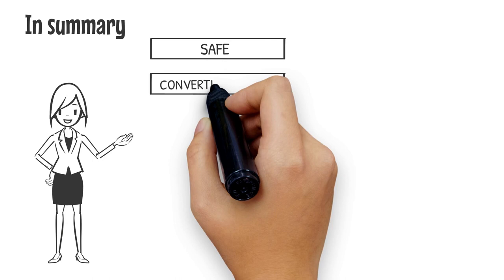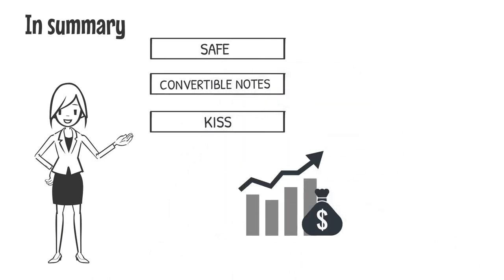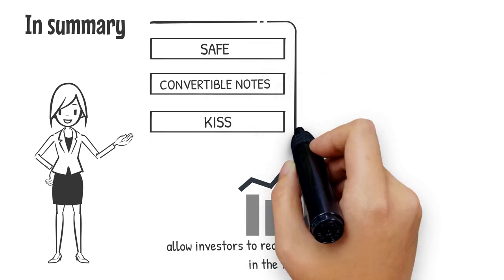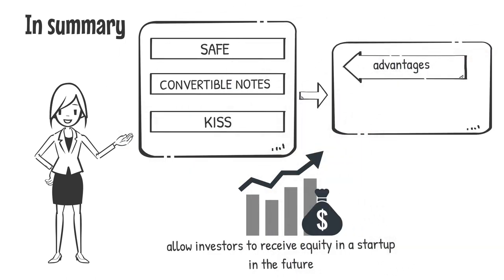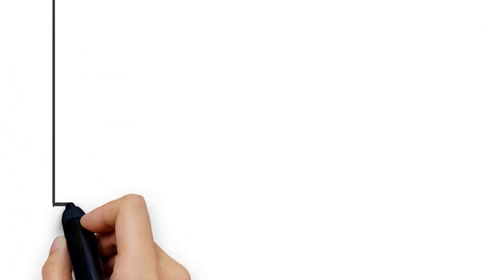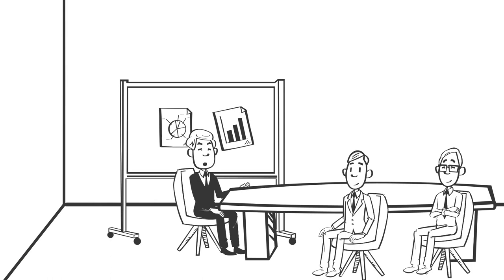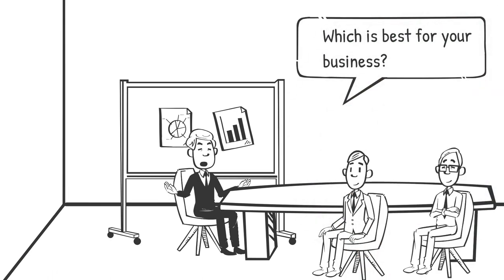In summary, SAFE, Convertible Notes, and KISS are all instruments that allow investors to receive equity in a startup in the future. Each of these instruments has its own advantages and disadvantages, and it is important to understand the differences between them before deciding which is best for your business.